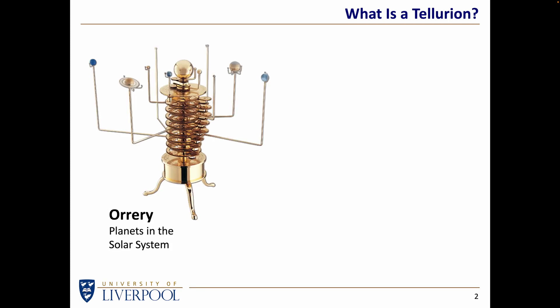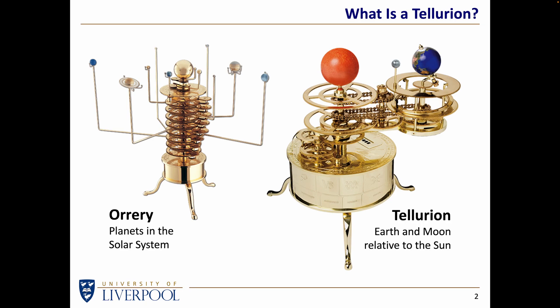You're probably familiar with the idea of an orrery — a clockwork or motorised model that tells us how the planets move around the Sun. Well, a Tellurian is similar to that, but is a much more detailed version, showing us the motion of the Moon and the Earth relative to the Sun. We have a mechanism that allows us to see the Moon going around the Earth, the Earth spinning, and the Earth is tilted.